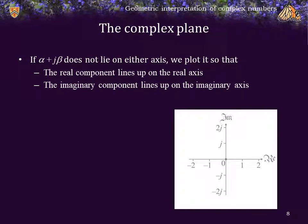If alpha plus j beta does not lie on either axis, we just plot it so that the real component lines up with the appropriate value on the real axis, and the imaginary component lines up with the corresponding value on the imaginary axis. So, for example, here we have z equals 0.8 plus j times 1.2. Similarly, at the origin, we have 0 plus j times 0, or just 0. And finally, here we have the point 0.6 minus j times 2.1. So, as you can see, every single point on the plane here will represent a different complex number, and every complex number is represented by some point on this plane.